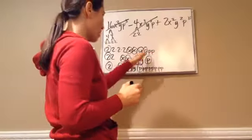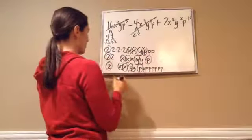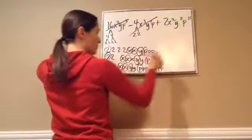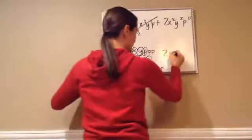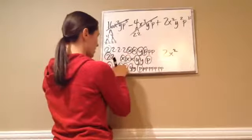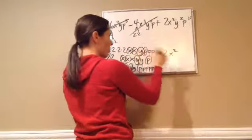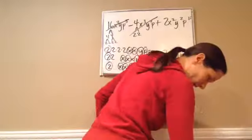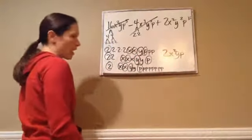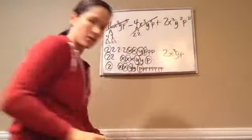So then we have 2 is what's common, two x's is what's common among all three of these, one y, and one p. And that is your final answer, 2x squared yp. And that is lesson 34.